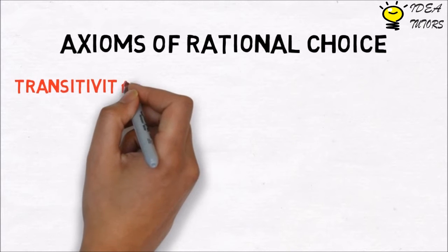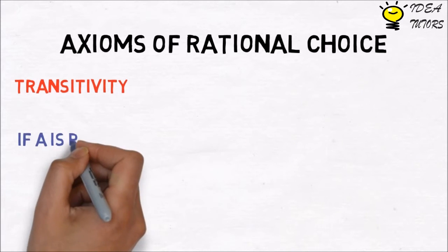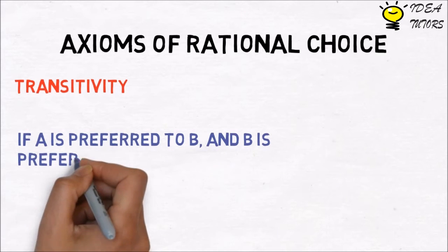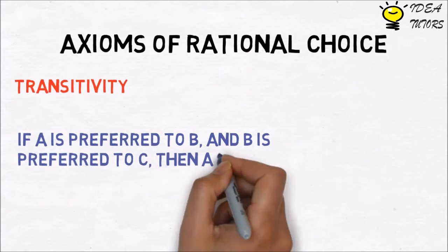Transitivity: If A is preferred to B, and B is preferred to C, then A is preferred to C. This assumes that the individual's choices are internally consistent.